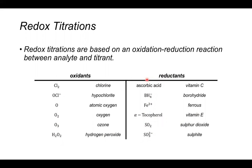Remember that if something is a reductant, it's going to be oxidized — it's going to lose electrons. If something is an oxidant, it itself is going to be reduced — it will gain electrons. Sometimes figuring out the species is not too difficult; we can look at the species involved and use our chemical knowledge. For example, chlorine likes to form chloride ions — it's in group seven, so gaining an electron is advantageous. Gaining an electron means it's reduced, making it an oxidant.